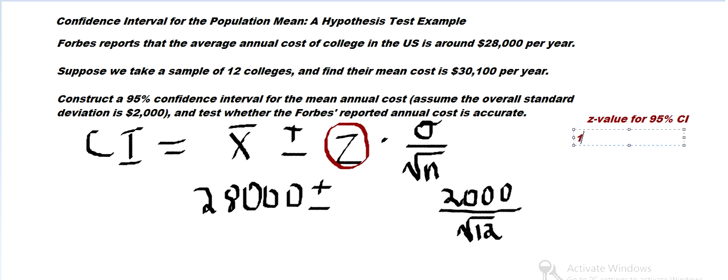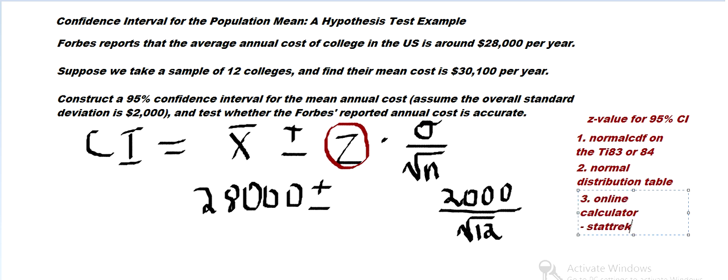One way is to use a normal CDF on the TI-83 or 84. Another way is to use the Z table or the normal distribution table. Or we can use an online calculator, and I use the one at StatTrack.